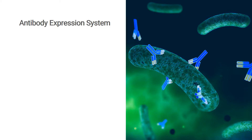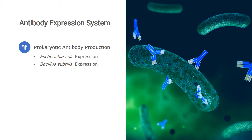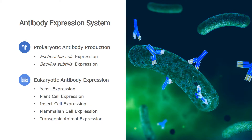There are two expression systems: prokaryotic expression and eukaryotic expression. In the prokaryotic expression system, there are two universal hosts: Escherichia coli and Bacillus subtilis. There are many hosts in the eukaryotic expression system, such as yeast, plant cell, insect cell, mammalian cell, and transgenic animals.